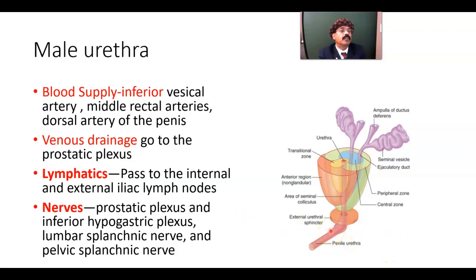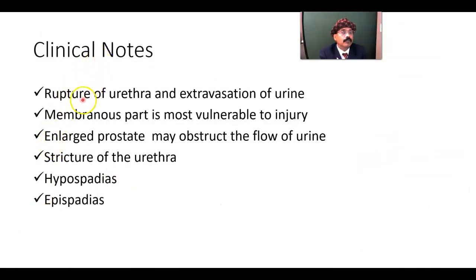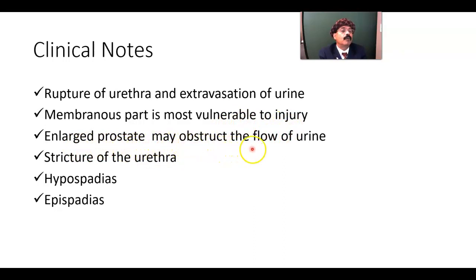Another least dilatable part is the external urethral meatus. Clinical notes: the urethra may be ruptured in any injury or trauma, causing extravasation of urine. The membranous part is most vulnerable to injury. An enlarged prostate — very common after age 55 — may obstruct urine flow, as the urethra passes through the prostate. Urethral stricture can result from gonococcal or chlamydial infection causing fibrous thickening.